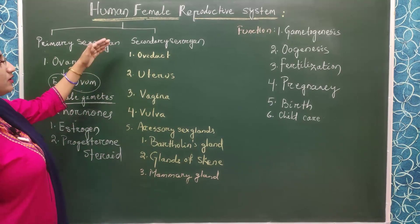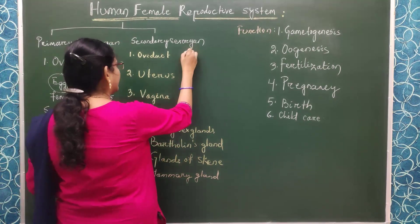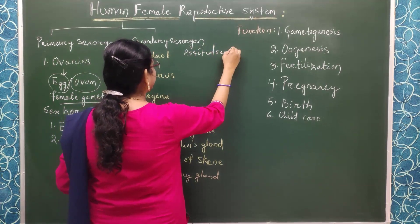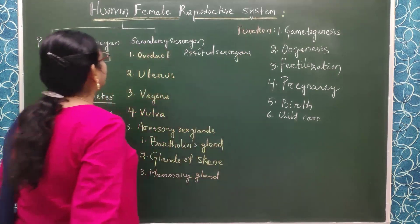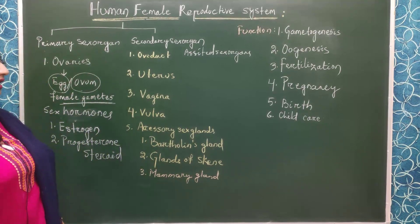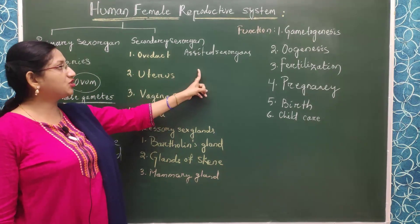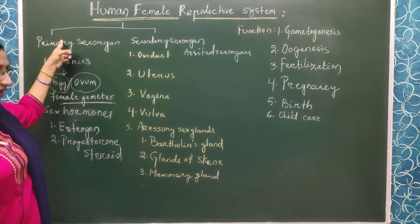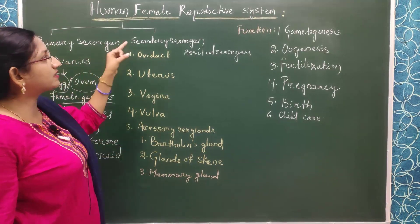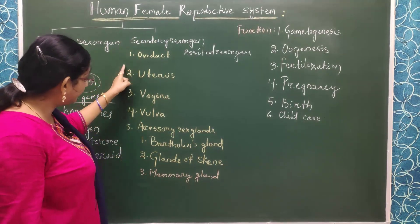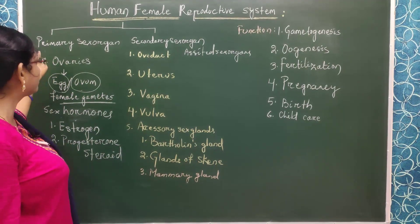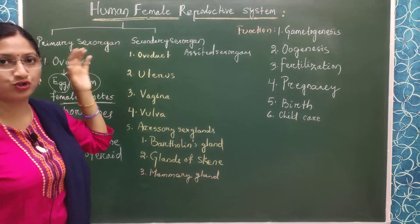Now, the different types of secondary sex organs — also called assisted sex organs — are those which help the primary sex organ. During the process of reproduction, these secondary sex organs assist the ovaries in the reproduction process.